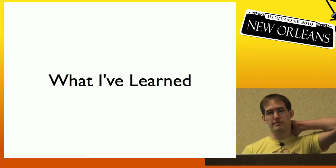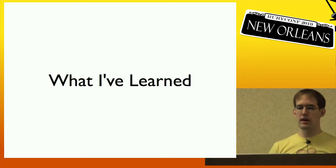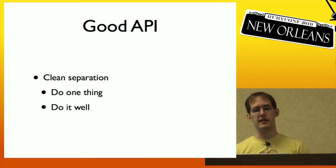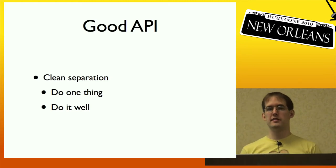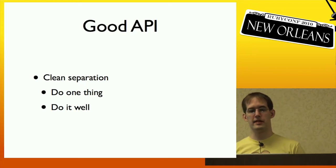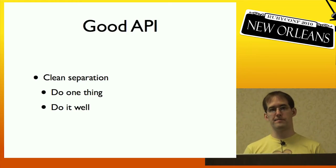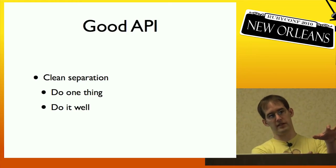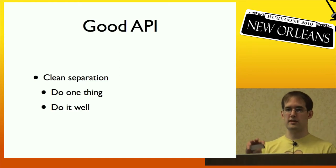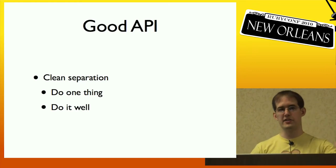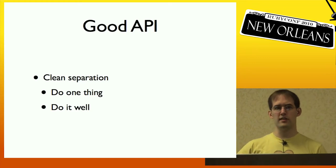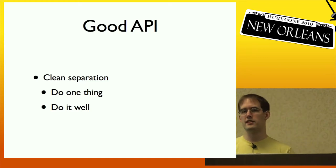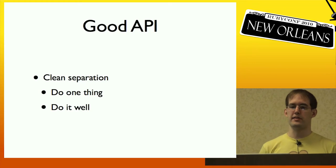What have I learned from RubyGems and RDoc? The first thing is: to have a good project, you need a good API. A good API has a clean separation of concerns. For example, the dependency installer should only be involved in figuring out what dependencies to install — caching is separate, and installing is separate from it. Your classes should all do one thing and do that one thing really well.